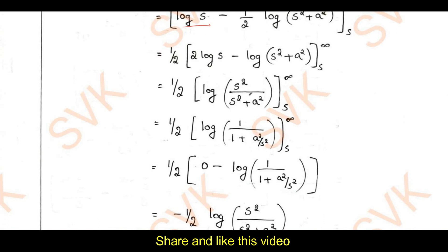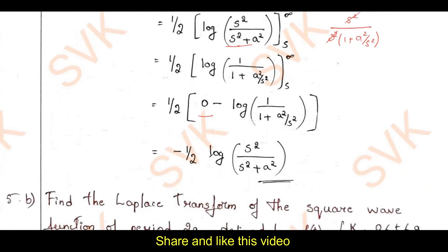Taking s² as common in the denominator, s²/(s²(1 + a²/s²)) gives 1/(1 + a²/s²). Applying the upper limit as s → ∞, a²/∞ → 0, so log(1) = 0. Applying the lower limit gives −(1/2)·log(s²/(s² + a²)), which is the required solution for this problem.